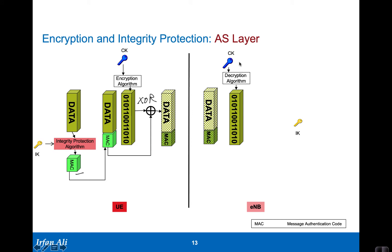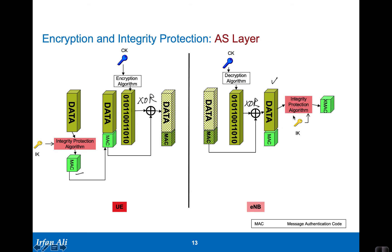The eNodeB follows the reverse process: first it decrypts using the ciphering key and a decryption algorithm, creating a random number that gets XORed. The good thing about XORing is that if you XOR with the same vector, you get back the original data and the message authentication code. Then you run the integrity protection algorithm, compute the expected MAC, and compare it to the MAC provided. If they match, this message can only have been sent by the UE because the integrity protection key is the same.